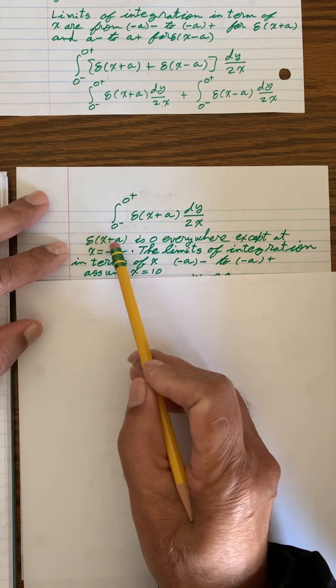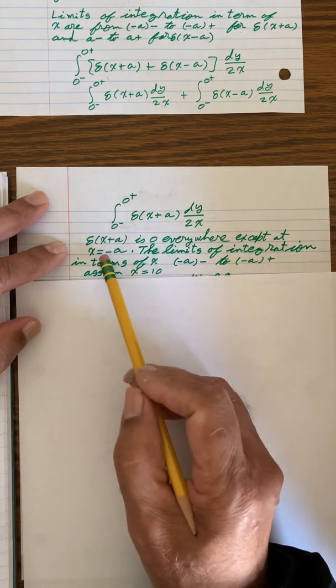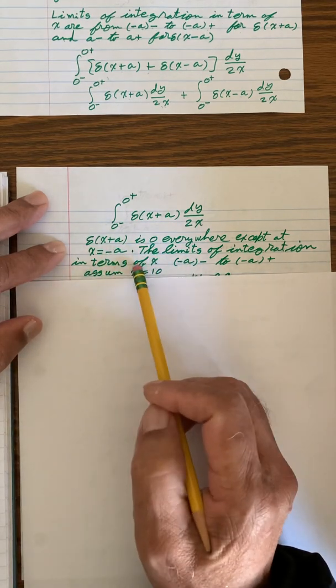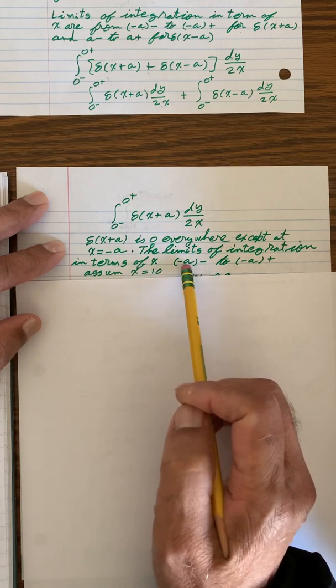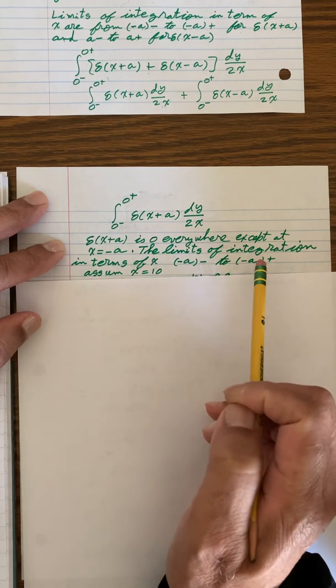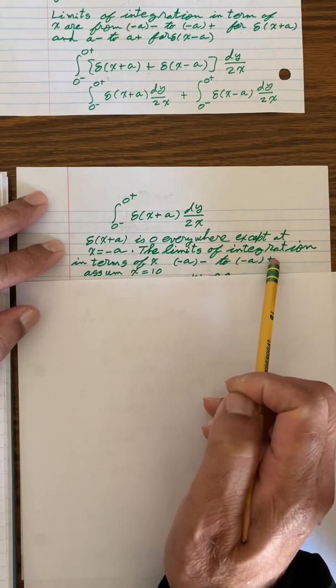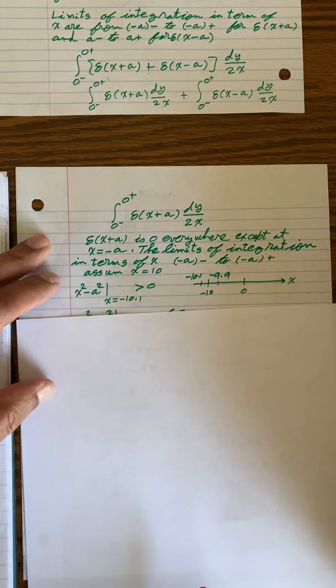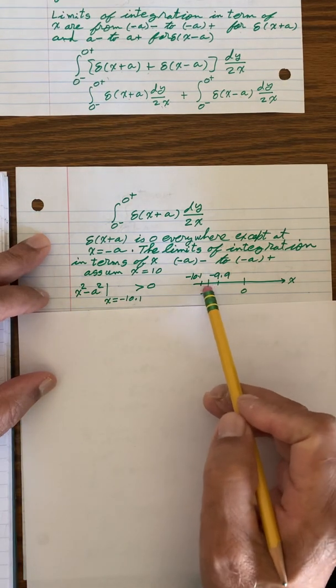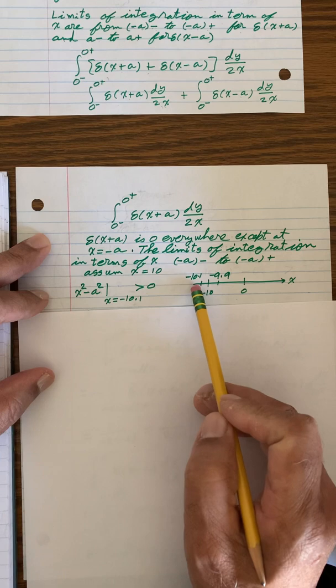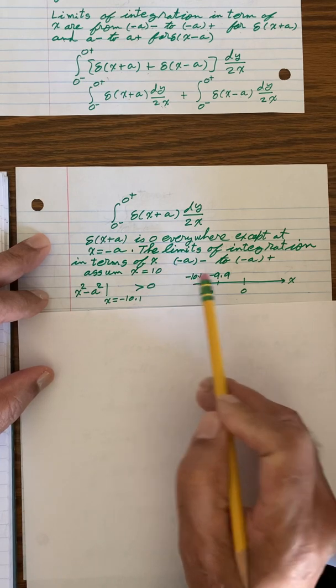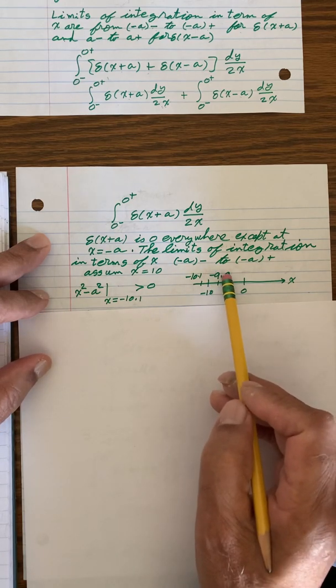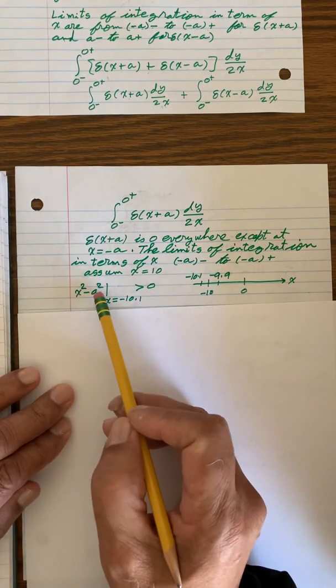And delta of x plus a is 0 everywhere, except at x equal to minus a. The limits of integration in terms of x are at minus a, a little bit less than that, and at minus a, a little bit more than that. Suppose x is equal to 10, and I have graphically shown that. And this is minus a minus, so this is minus 10.1, and minus a plus, and that's minus 9.9.